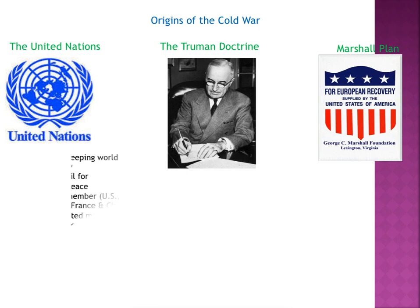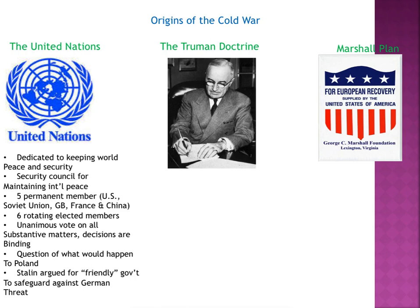First, the United Nations. After World War II, the League of Nations obviously didn't work out, so they started another peace organization called the United Nations, dedicated to keeping world peace and security. The Security Council was there for maintaining international peace, with five permanent members — the U.S., the Soviet Union, Great Britain, France, and China — plus six rotating elected members. Decisions on matters of substance had to be unanimous, and decisions were binding.